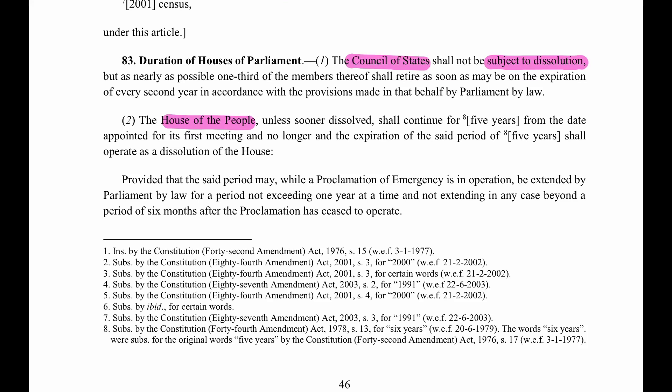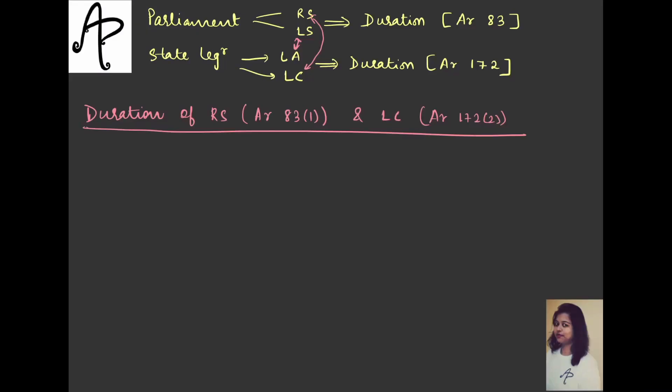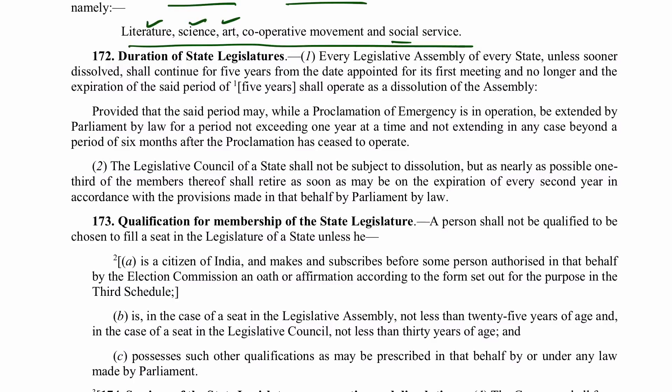We'll be seeing terminologies like summon, prorogue, dissolve etc. in a couple more lectures. 'Dissolve' means a complete end to that house - just understand this for now. So it is telling Rajya Sabha will not be subject to dissolution - no dissolution, no complete end, which means it is going to continue.